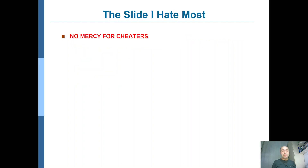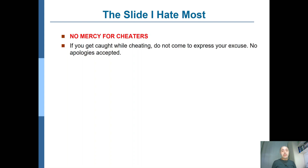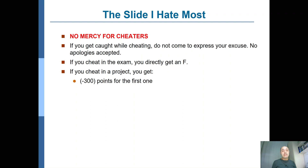The slide I hate most is about cheating. As in all my other courses, there will be no mercy for cheaters. If you get caught while cheating, do not come to express your excuses to me — I will not accept any apologies and the rules will be applied directly. If you cheat in an exam, you will just get an F. If you cheat in a project, you will get minus 300 points for the first offense. That means if you couldn't do the project, just say you didn't do it and you will get zero points. If you cheat, you get minus 300 points. We have two projects, so if in the next project you get 100 points, your overall project score would be minus 200. Since projects have 30% weight in your overall score, you will likely not be able to pass.